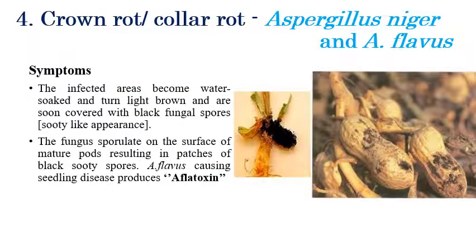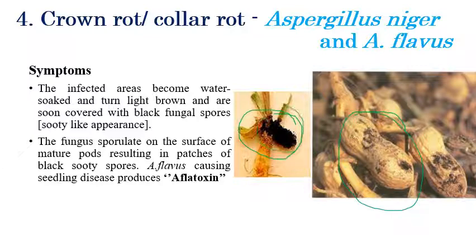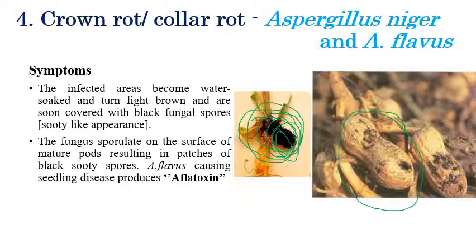Crown rot or Collar rot is caused by Aspergillus niger or Aspergillus flavus. Black color powdery or sooty-like fungal growth can be clearly seen on the pods and in the lower stem region. These are heavily infected with Aspergillus fungus.